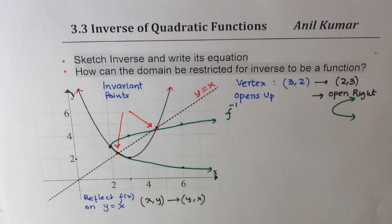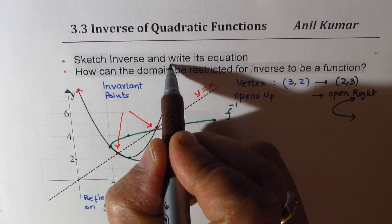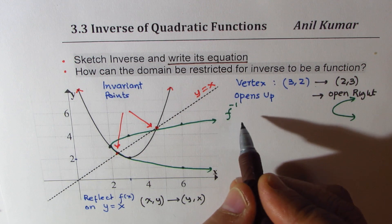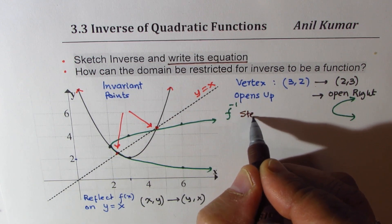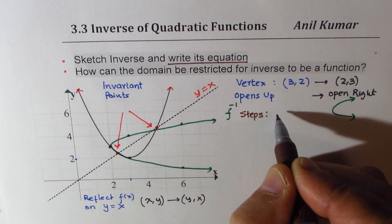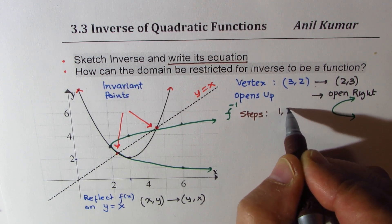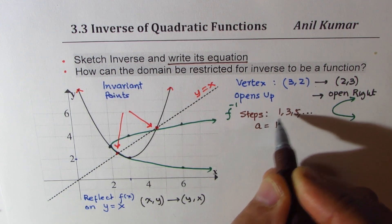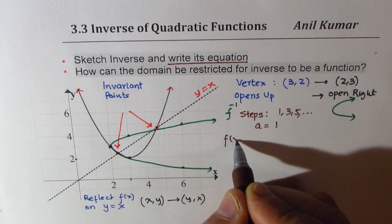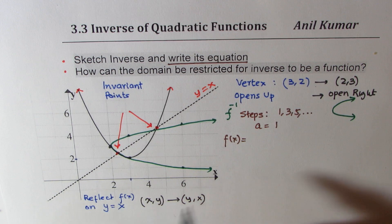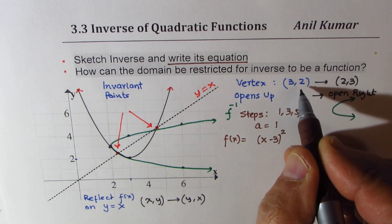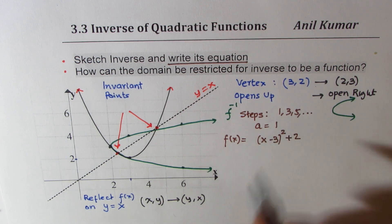Now let's write down the equations. The steps are 1, 3, 5, 7, so we know the value of a is 1. Therefore, the function f(x) can be written with vertex (3, 2) as f(x) = (x − 3)² + 2. It opens upwards.